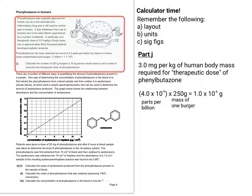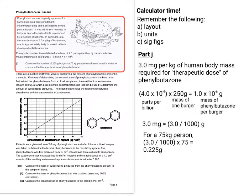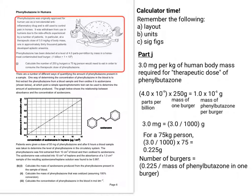So taking the parts per billion as 4.0 times 10 to the minus 9 and 250 grams of the mass of one burger, that gives us the mass of phenylbutazone for every burger. So 3.0 milligrams is 3.0 divided by 1,000 in grams. So because 3.0 divided by 1,000 times 75 would be the therapeutic dose for a 75 kilogram person, you'd need 0.225 grams. So to work out the number of burgers, you'd divide that by the mass of phenylbutazone in one burger. So that would give you a very tasty 225,000 burgers you'd have to eat.